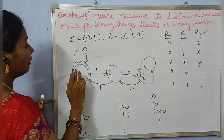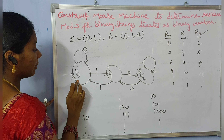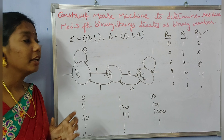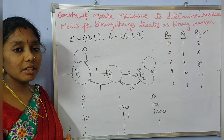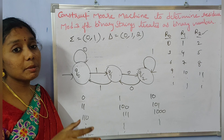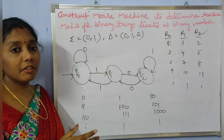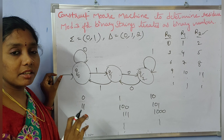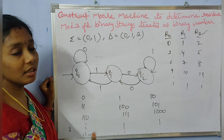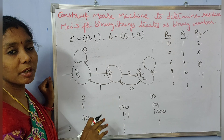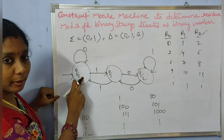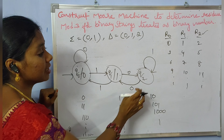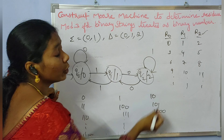To convert to a Mealy machine, we first remove the double circle from the final state. Then we assign outputs: Q0 outputs 0 because the string is divisible by 3 with remainder 0; Q1 outputs 1 because the remainder is 1; Q2 outputs 2 because the remainder is 2. So we add output 0 to Q0, output 1 to Q1, and output 2 to Q2.